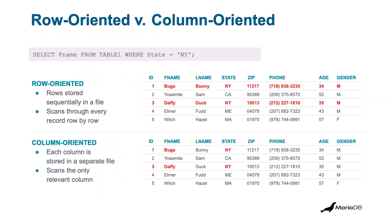For those of you not familiar with columnar versus row-based storage, here's a brief explanation. Row-oriented storage, like InnoDB or MyISAM, stores data in a complete row. In ColumnStore, each column in the database is stored in a separate file. When you do a row-oriented scan or selection, you have to scan the entire row, which creates IO bottleneck because there's a lot more information to parse. In column-oriented storage, it only goes to the particular column in question and scans just that information.